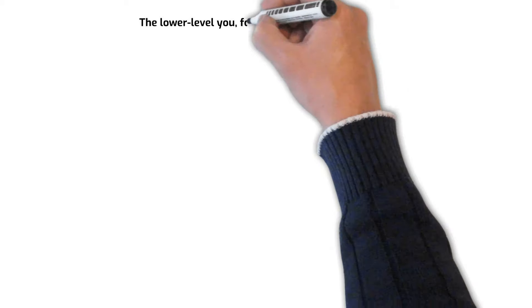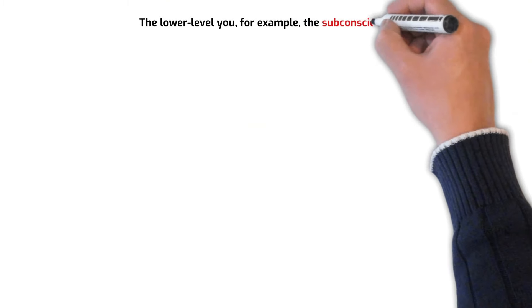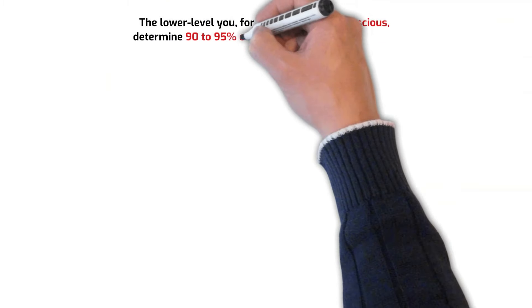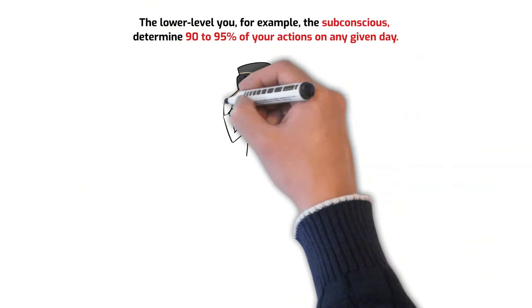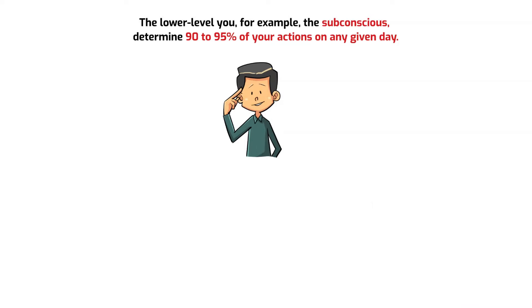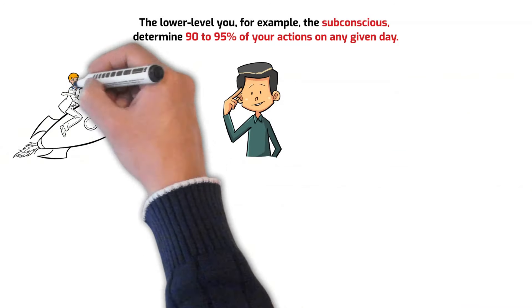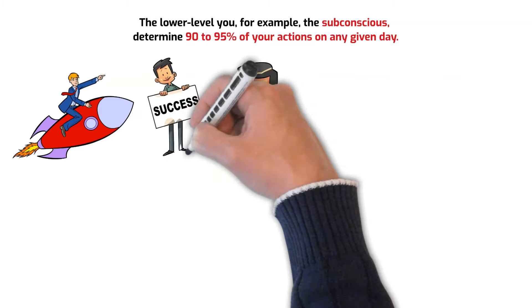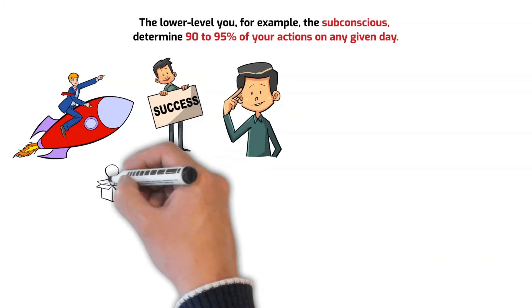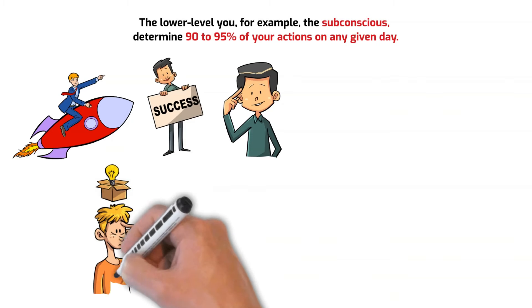The lower level you, for example, the subconscious, determines 90-95% of your actions on any given day. It is where your predominant mental attitude and habits originate. The goal is to align your higher and lower level minds to achieve your financial or lifestyle goals without resistance. This is easier said than done, but breaking bad habits is a good start.